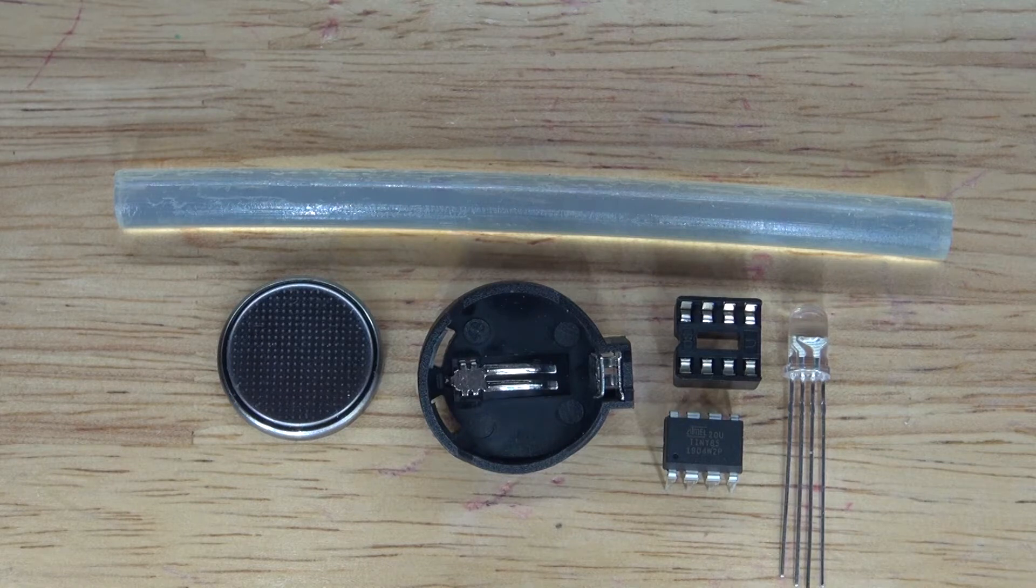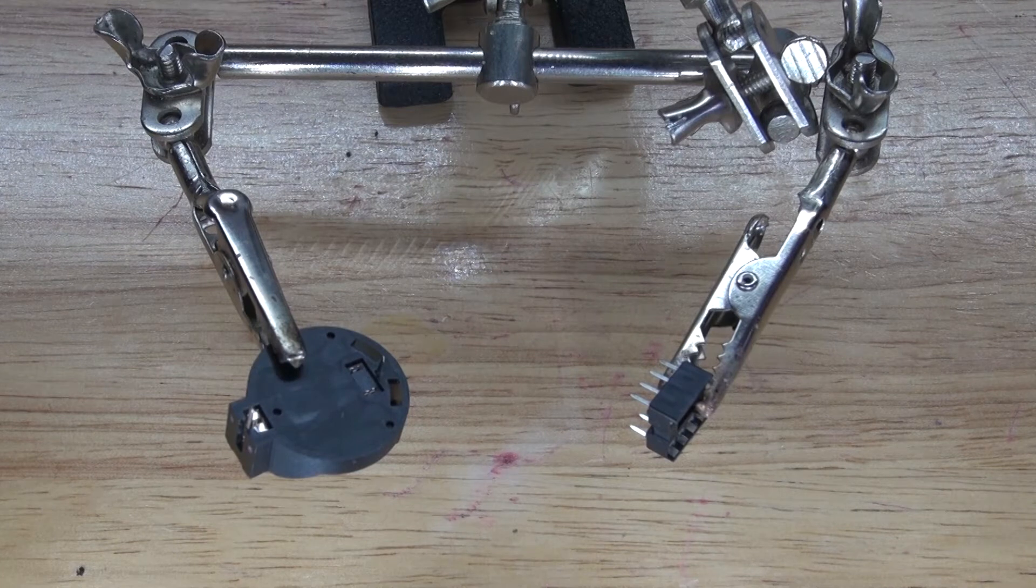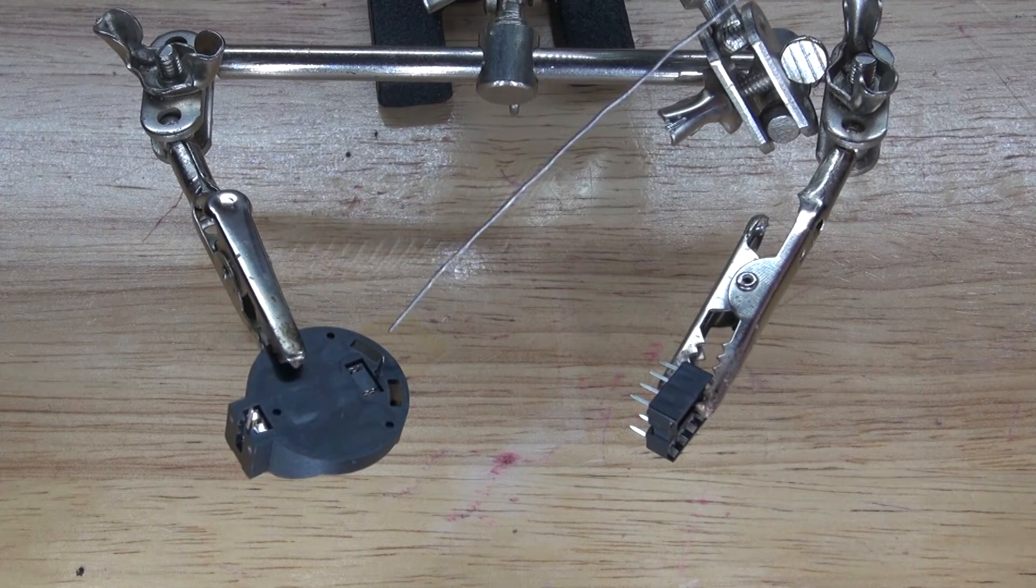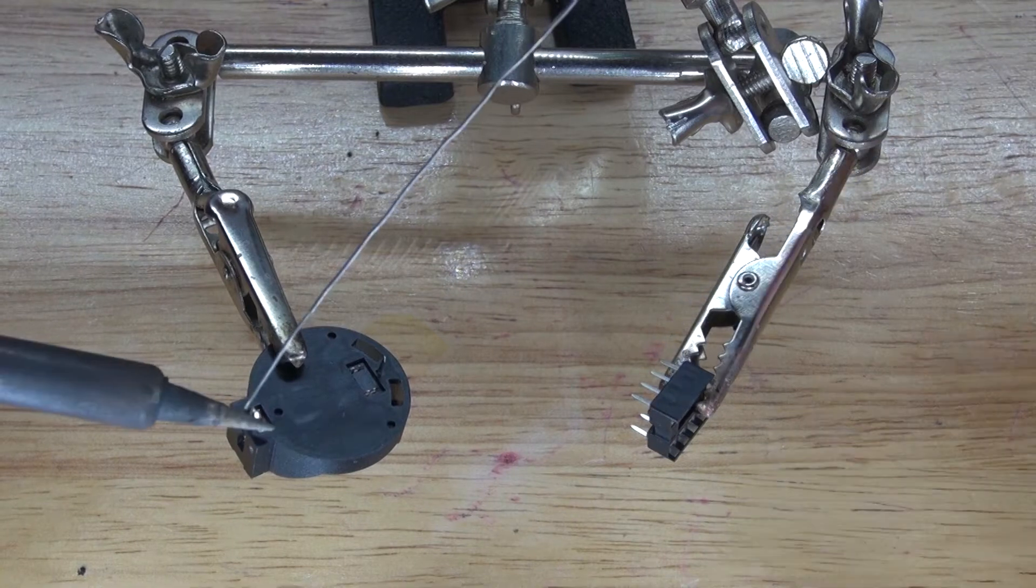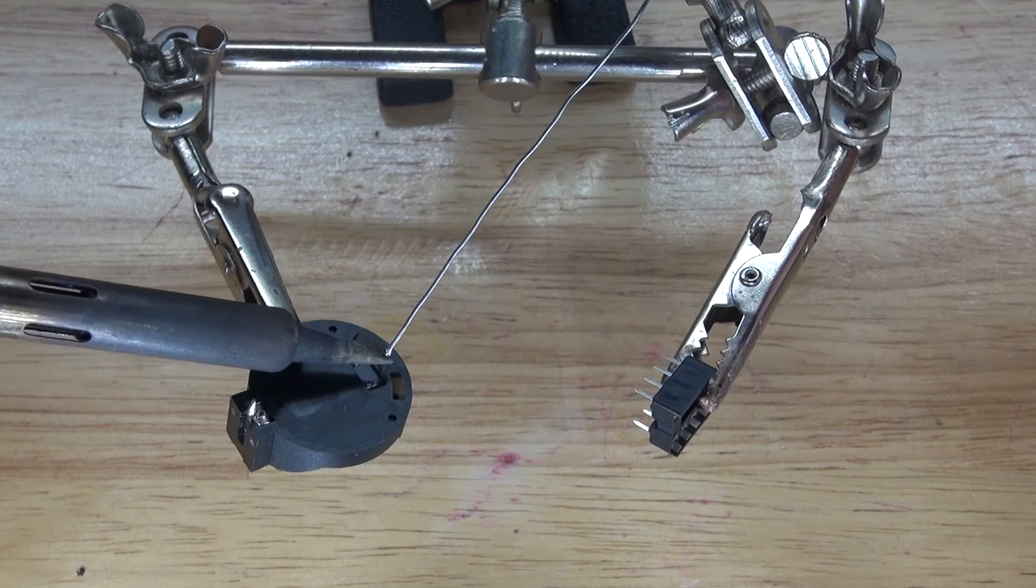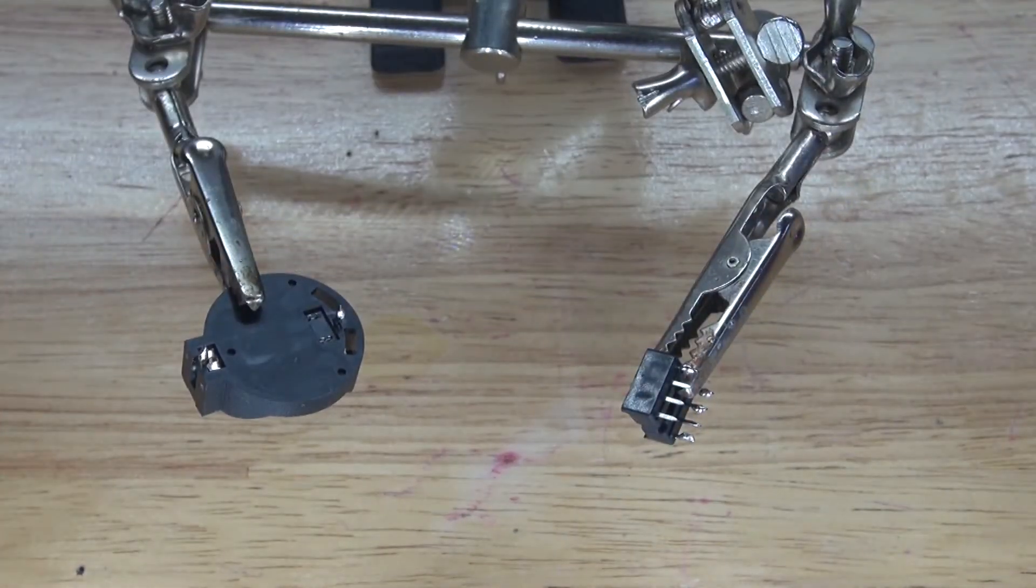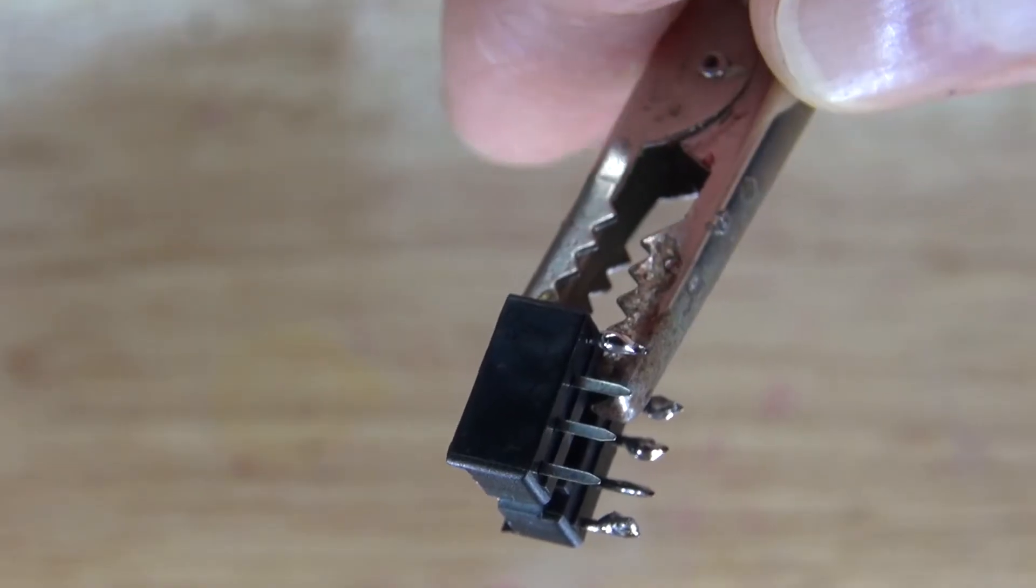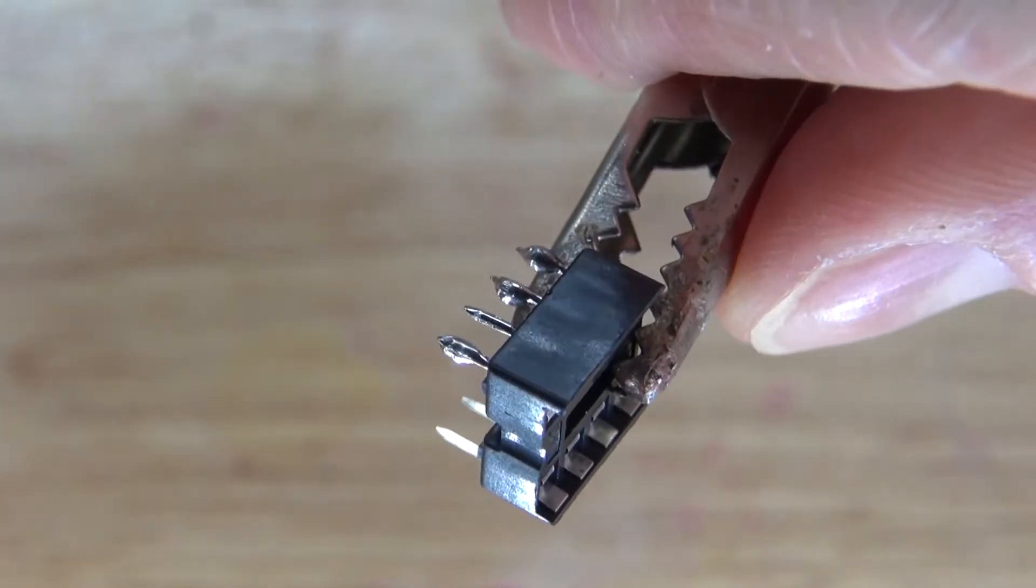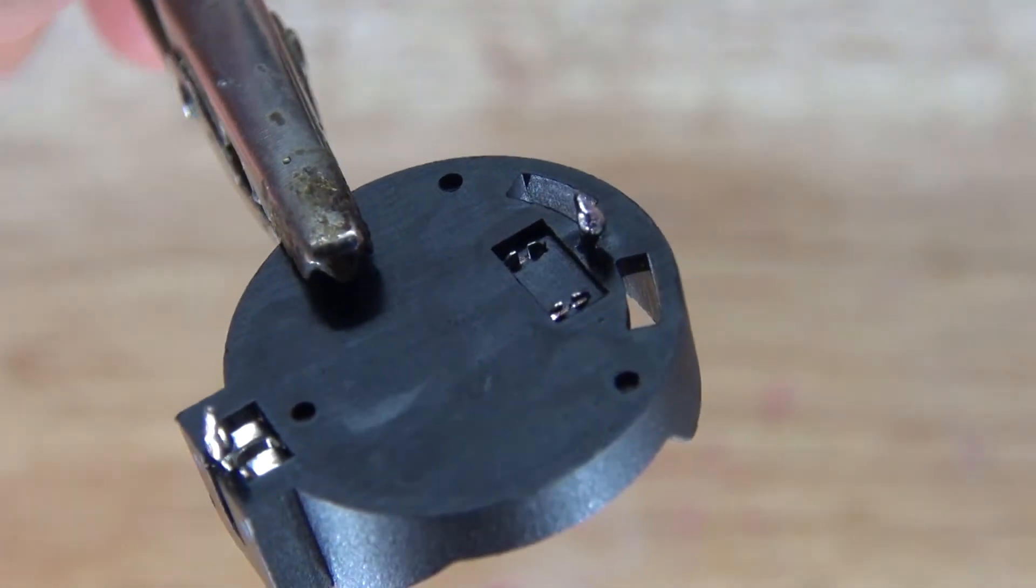Now let's go into the simplest project and let's get started. First I'm going to start with the 3 volt button cell battery holder and the IC socket holder. What I'm going to do is I'm going to solder tin all of the leads. And this is what the IC socket holder should look like. And this is what the 3 volt button cell battery holder should look like.